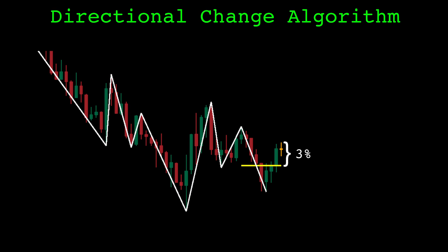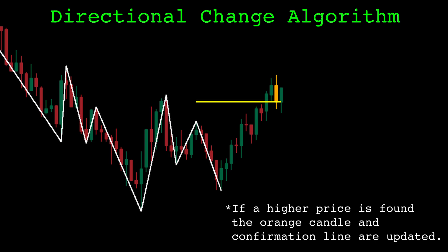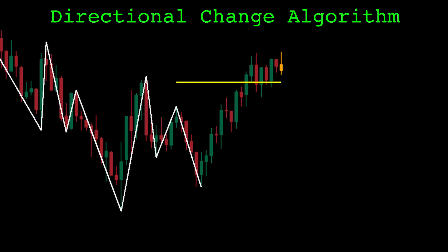The yellow line is our confirmation line. It is 3% below the high of the orange candle, the highest high. Once the price closes below this level, the price has retraced enough from the high and the top is confirmed at the high of the orange candle. Like so.